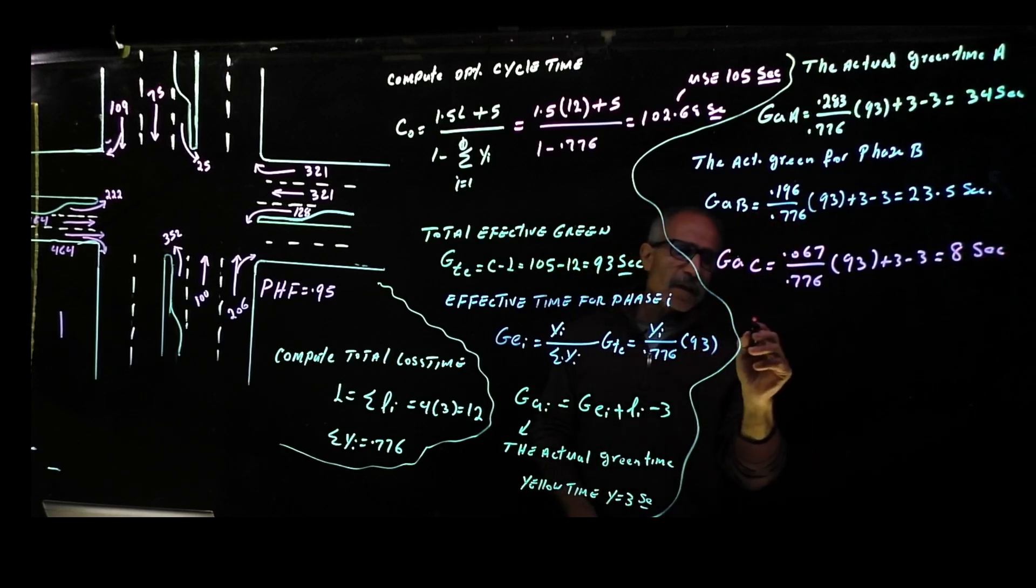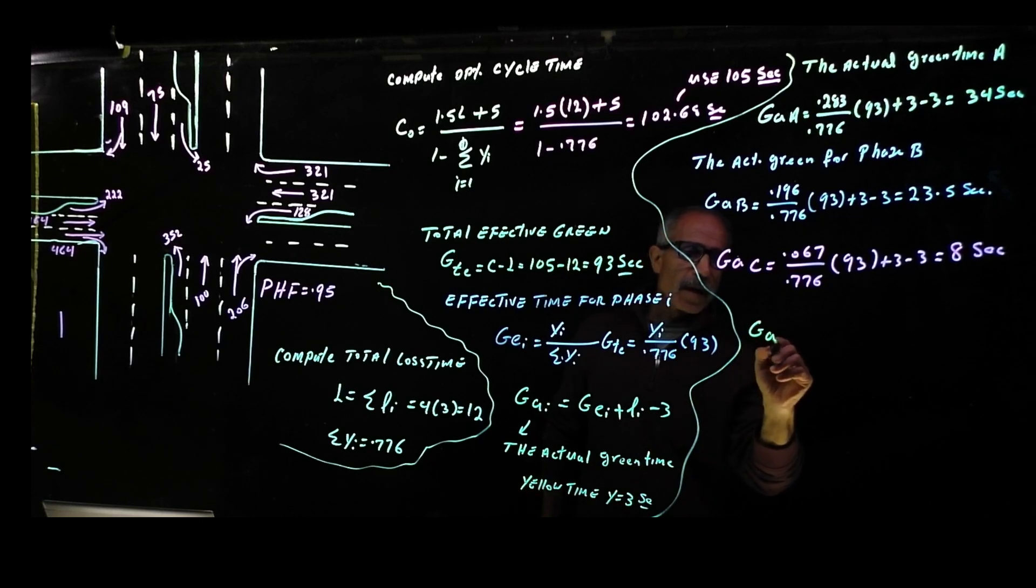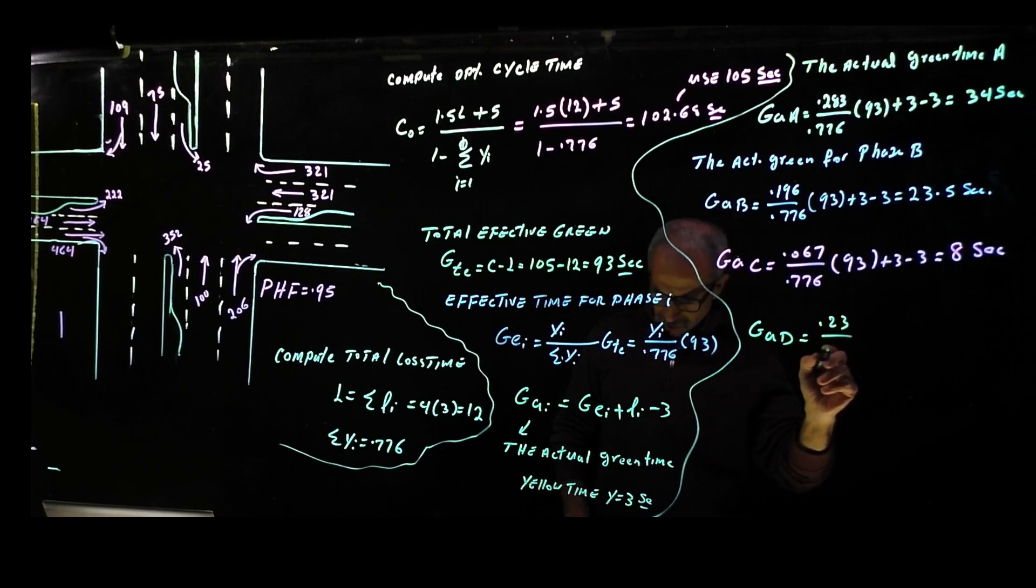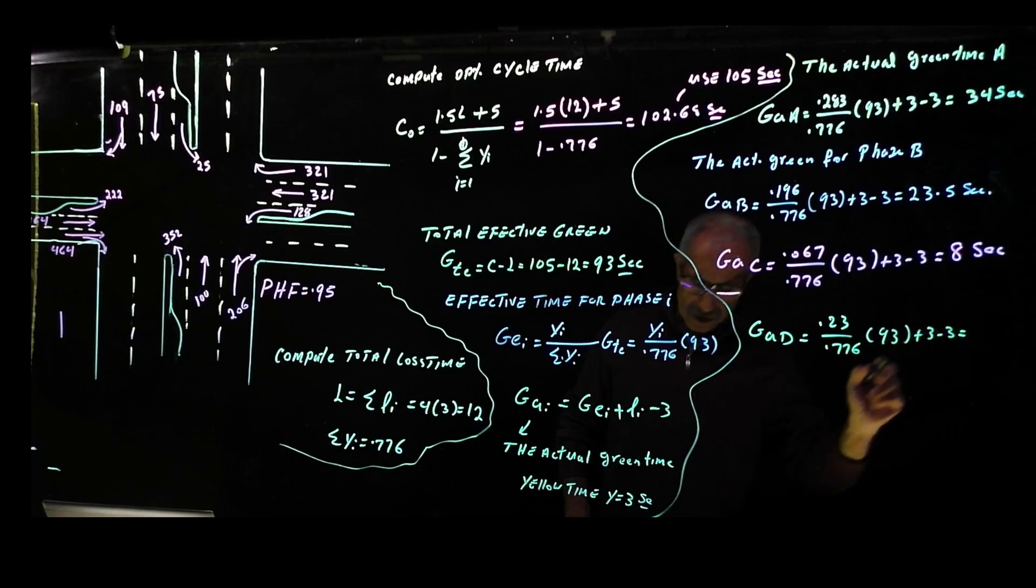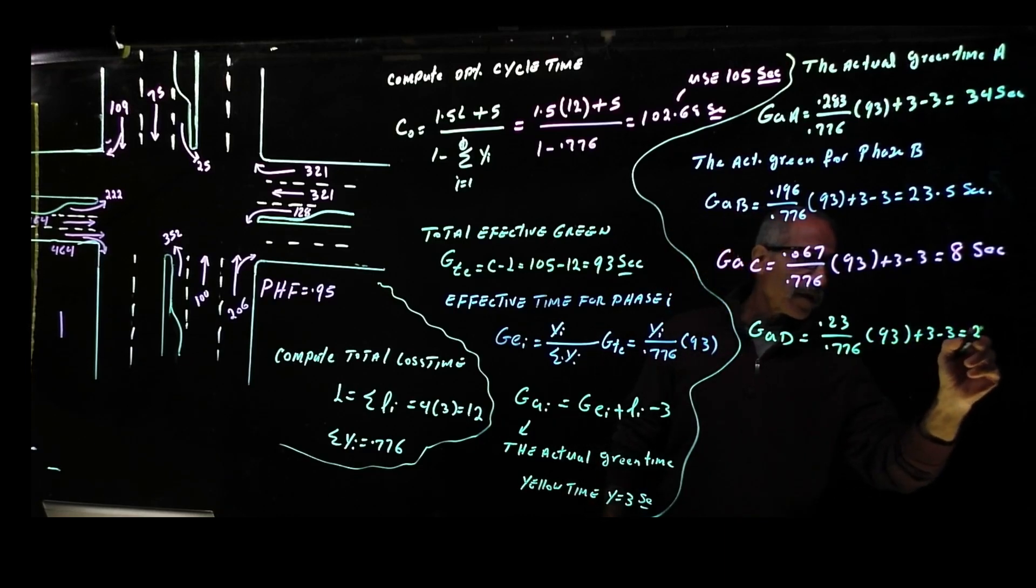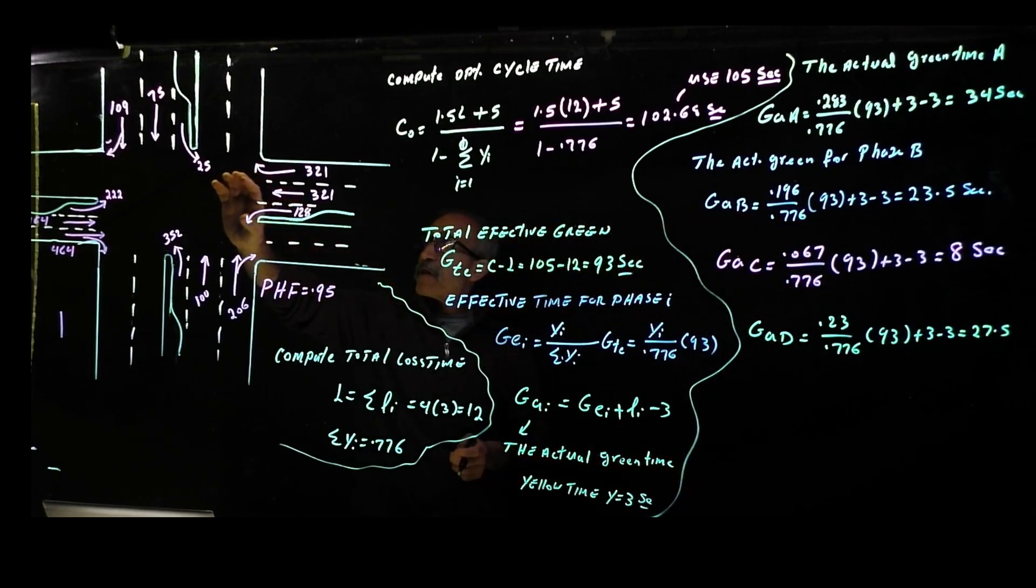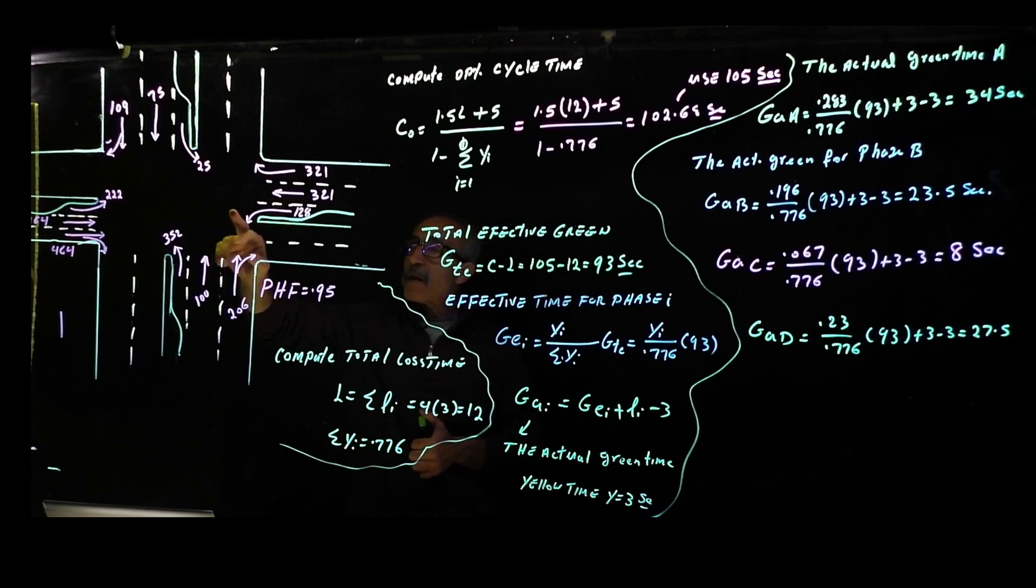Finally the last phase, GAD for phase D was 0.23 divided by 0.776 times 93 plus 3 minus 3, and that comes up to 27.5 seconds. So this is the green time for each phase.